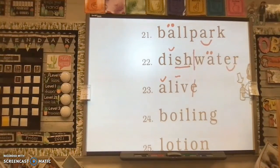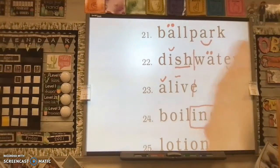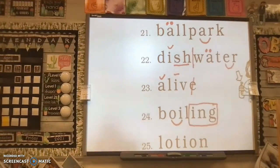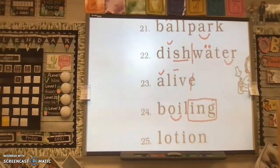All right, number 24. What do you see? Awesome. I see suffix I-N-G as well. What else do you see? Yes, I see diphthong O-I like in B-O-I-L. Awesome job.